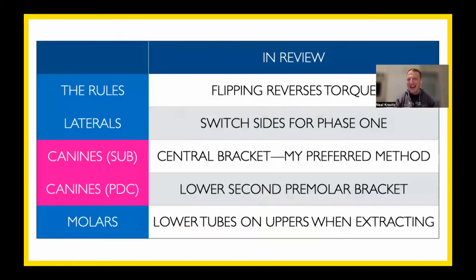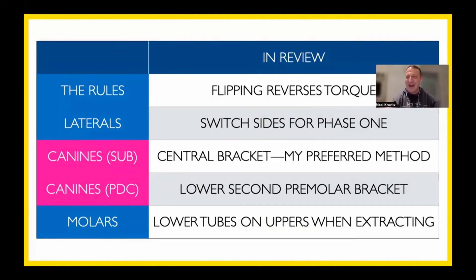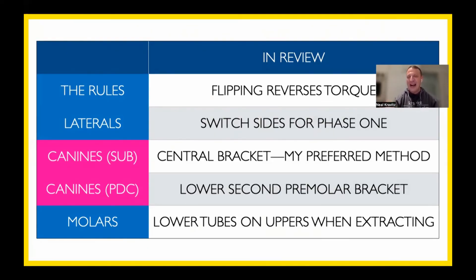In review: when we flip a bracket 180 degrees, we reverse the torque but do not affect the tip. I like to switch my maxillary lateral incisors during the first phase of treatment to reverse the tip from distal to mesial to make room for those maxillary canines. For canine substitution cases, I prefer a central incisor bracket with 17 degrees of palatal root torque, but don't forget Dr. Rosa's technique of using a flipped mandibular second premolar bracket. For canines that erupt palatally where I want labial root torque, I use a lower second premolar bracket properly oriented with the post gingival. And for maxillary molars when I want buccal root torque or when finishing class 2 or class 3 molar, I use lower first molar tubes. Thank you so much.